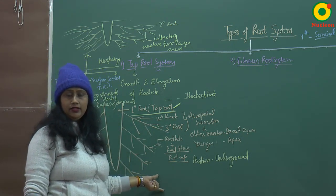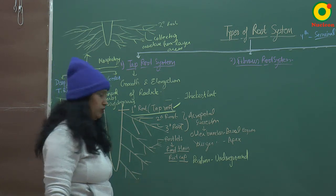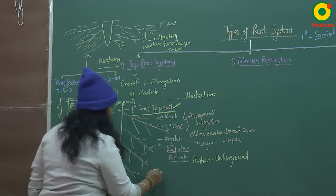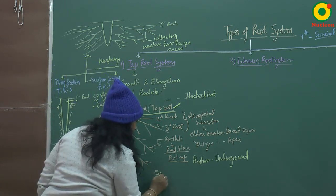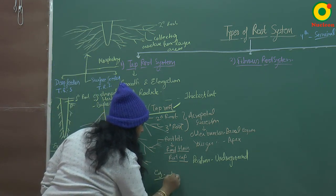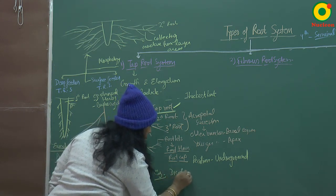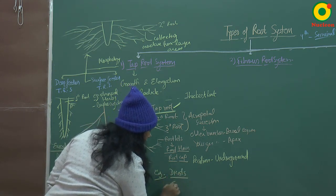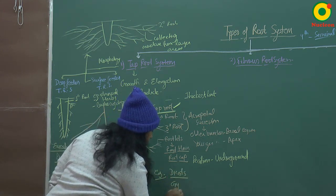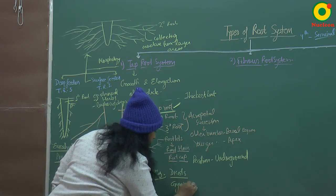Tap root systems are generally present in dicots and gymnosperms. So you can find tap root system in dicots and in gymnospermic plants.